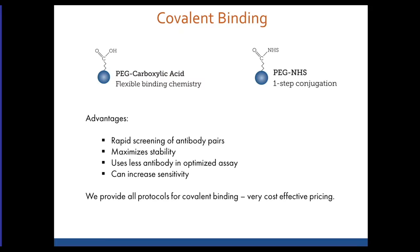Covalent binding lets you rapidly screen antibody pairs — we have yet to find a completely non-functional conjugate using covalent binding, whereas with physisorption some antibodies simply don't bind. If you're rapidly screening antibody pairs at the start of lateral flow development, covalent binding can be much better. In some cases we need far less antibody in an optimized assay than with physisorption, and the covalent chemistry can be used to increase assay sensitivity or adjust the amount of antibody on the surface. We're very happy to provide all protocols for covalent binding at no additional cost compared to physisorbed gold.